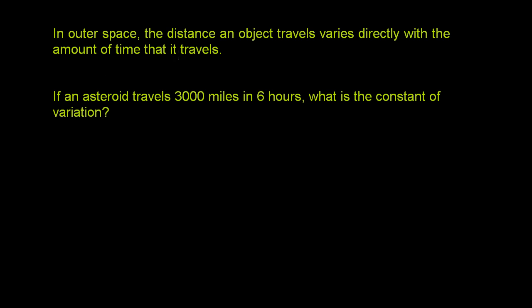In this problem, they're telling us that in outer space, the distance an object travels varies directly with the amount of time that it travels. That's assuming it's not accelerating and there's no net force on it. So they're talking about a specific object.